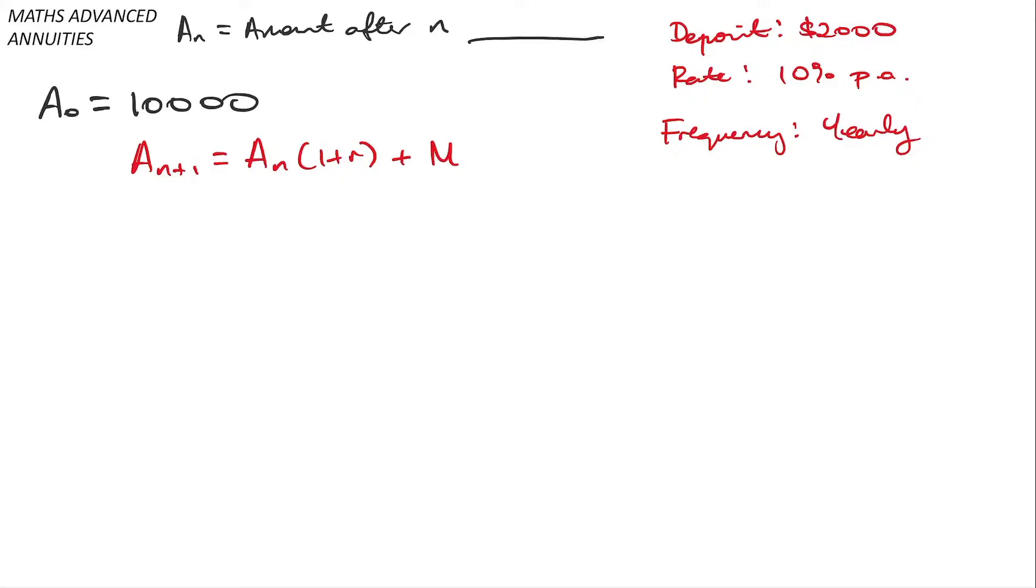So in an annuity problem, I'm going to be given three ingredients which I have on my iPad. Firstly, we have either a deposit or a withdrawal value to make at the end of every year. In my case, I'm depositing 2k.